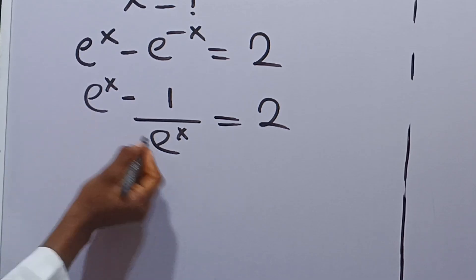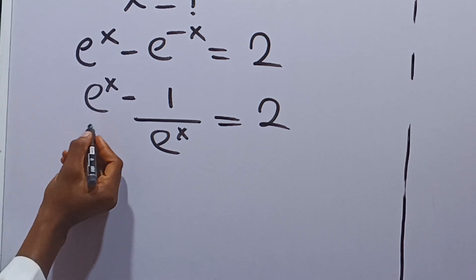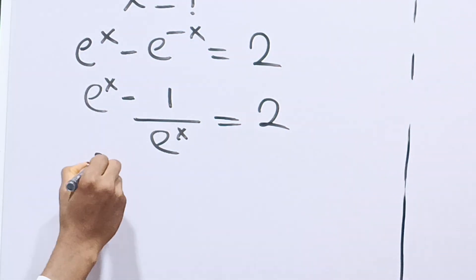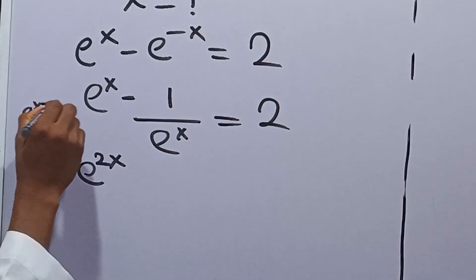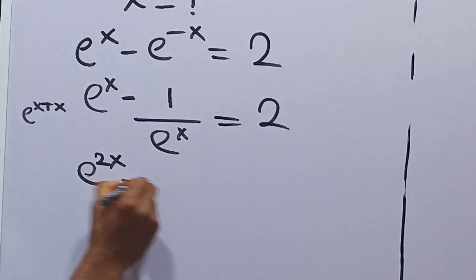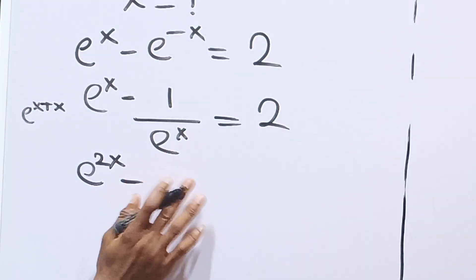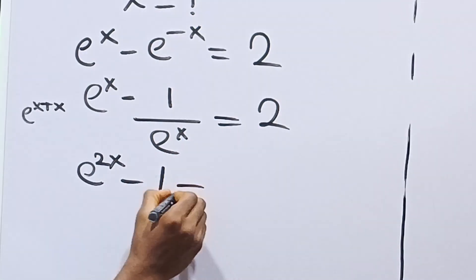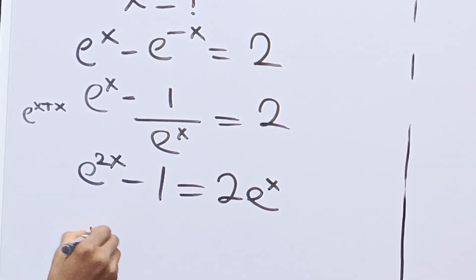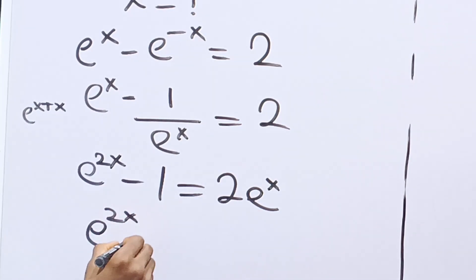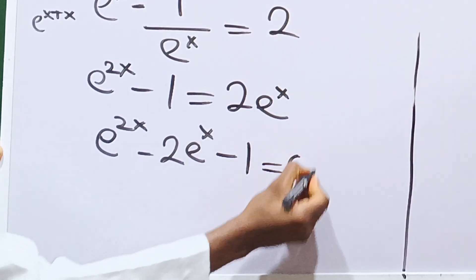Now, let's multiply each term by e raised to the power x. We get e raised to the power x times e raised to the power x, which is e raised to the power 2x, minus 1, equals 2 times e raised to the power x. Rearranging, we now have e raised to the power 2x minus 2e raised to the power x minus 1 is equal to 0.